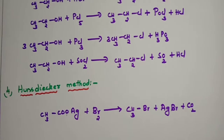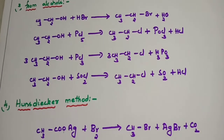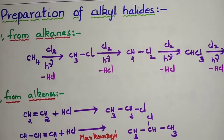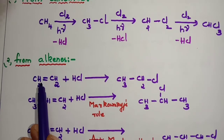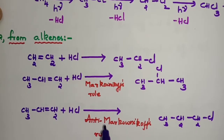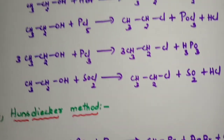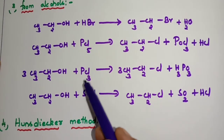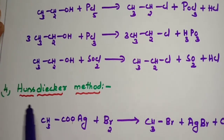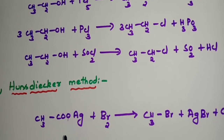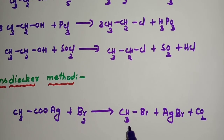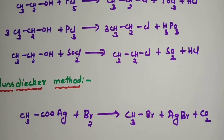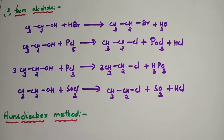So these are all four methods of preparation of alkyl halides. First: from alkanes. Second: from alkenes, following Markovnikov's rule and anti-Markovnikov's rule. Third: from alcohols, using HBr, PCl5, PCl3, or SOCl2. Fourth: the Hunsdiecker method — silver acetate plus bromine gives methyl bromide plus silver bromide plus carbon dioxide. Kindly practice all these reactions. Meet you in the next video. Thank you.